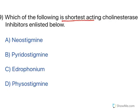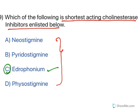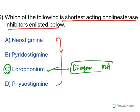Which of the following is the shortest-acting cholinesterase inhibitor? Among all the cholinesterase inhibitors listed, the shortest-acting one is edrophonium. Because of its short duration of action, edrophonium is used to diagnose myasthenia gravis. Edrophonium is the answer.